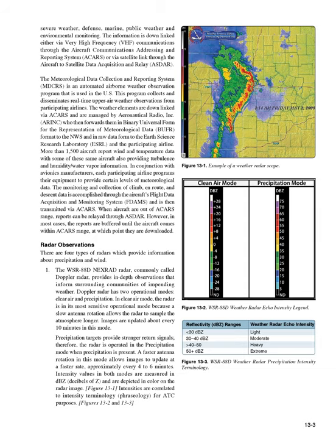Significant weather prognostic charts provide an overall forecast weather picture. Surface Analysis Chart. The surface analysis chart depicts an analysis of the current surface weather. This chart is transmitted every three hours and covers the contiguous 48 states and adjacent areas. A surface analysis chart shows areas of high and low pressure, fronts, temperatures, dew points, wind directions and speeds, local weather, and visual obstructions.